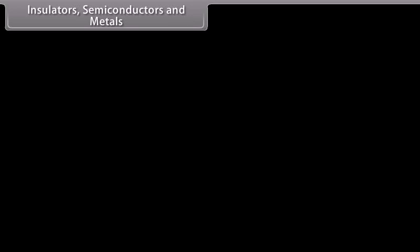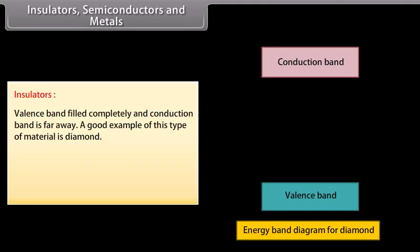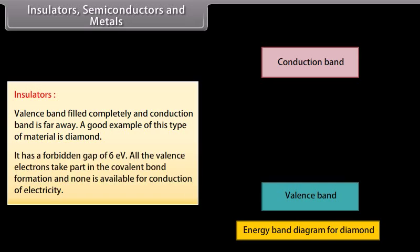On the basis of band theory of solids, solids are classified as insulators, semiconductors and metals. Insulators have a valence band that is completely filled and a conduction band that is far away. A good example is diamond, which has a forbidden gap of 6 electronvolts. All the valence electrons take part in covalent bond formation and none is available for conduction of electricity.